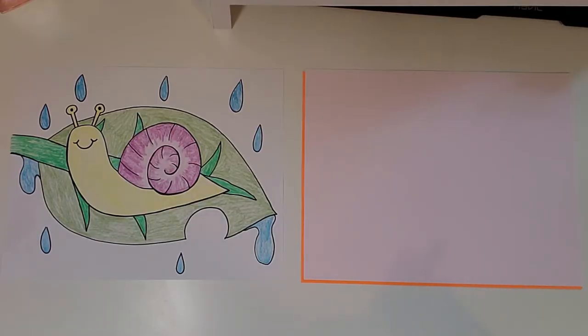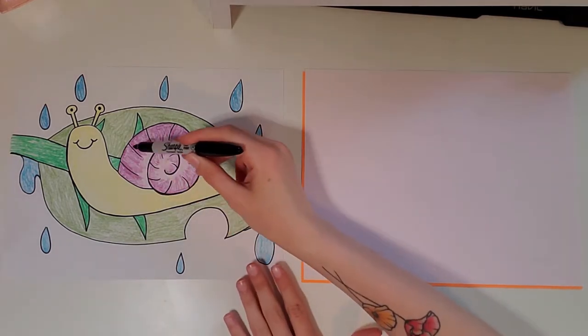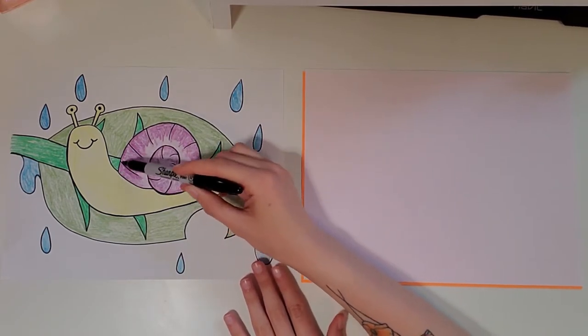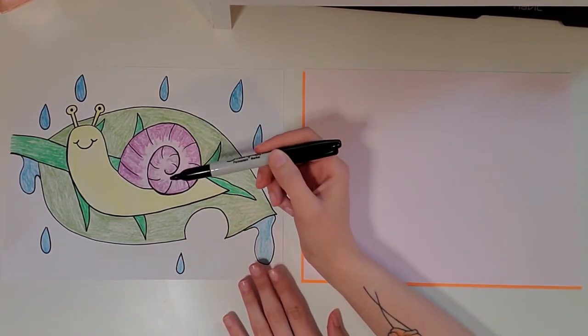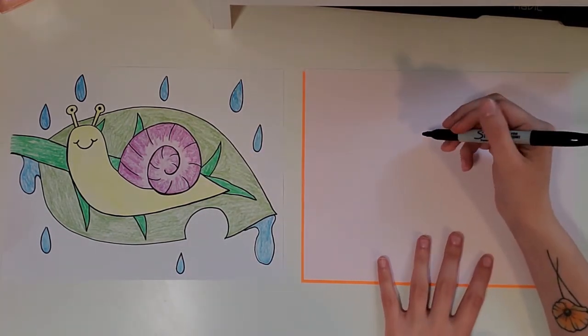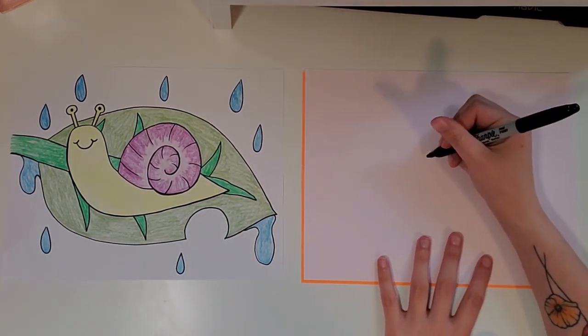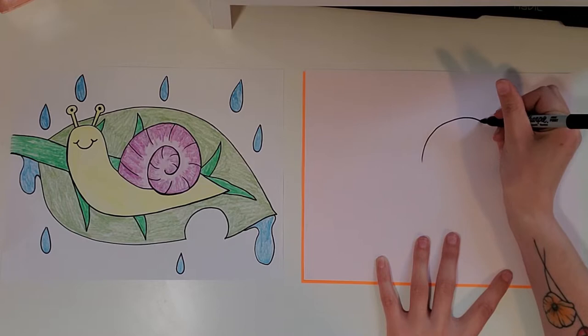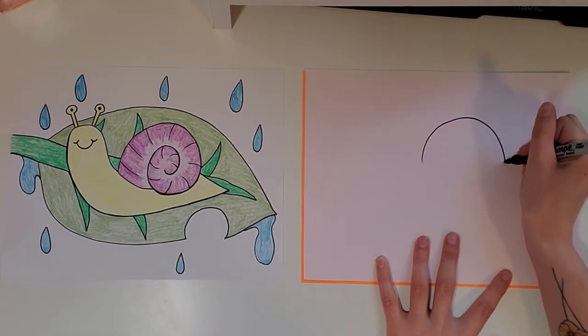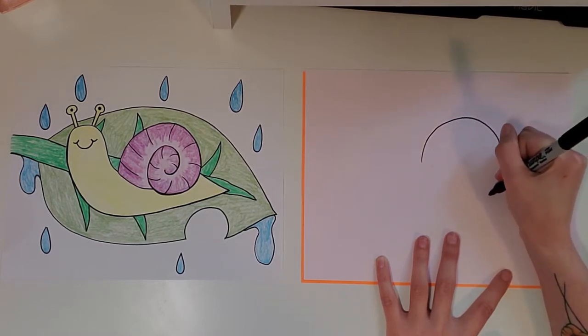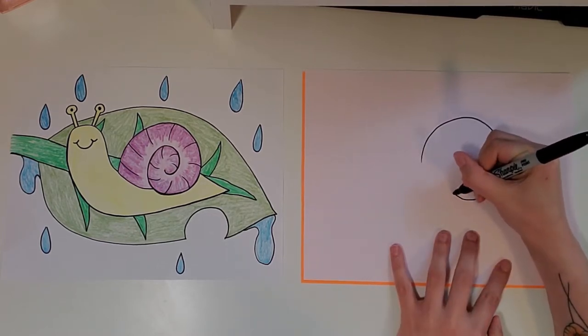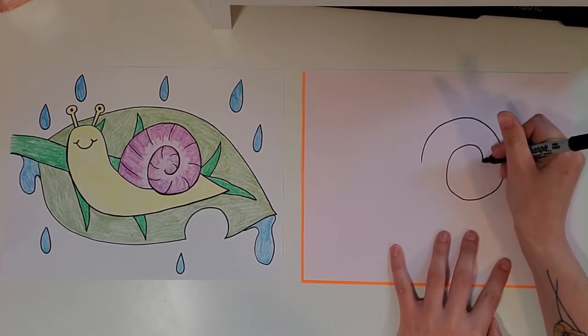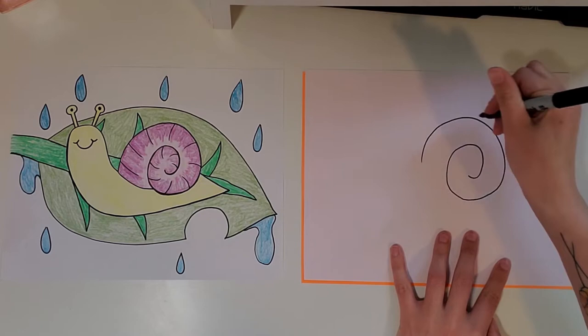Alright guys, so the first thing we are going to start with is drawing a curl for our snail's shell. How big you make this curl kind of determines how big your snail will be. So I'm going to start right in the middle of my paper. And I am going to go up and over, and then it's almost like we're drawing a circle, but we're not going to go all the way back to this. Before I get there,